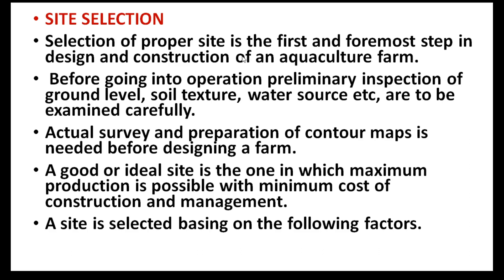An actual survey and preparation of contour maps is needed before designing a farm. A contour map defines the boundary outline of the site. A good or ideal site is one in which maximum production is possible with minimum cost of construction and management — so the site should be selected with maximum production at minimum cost.